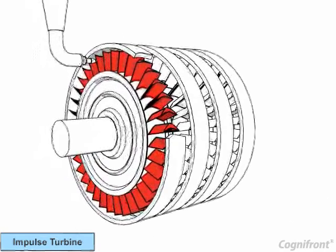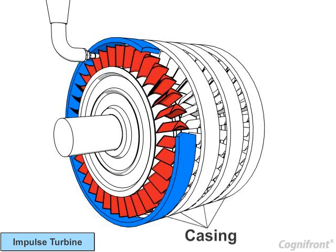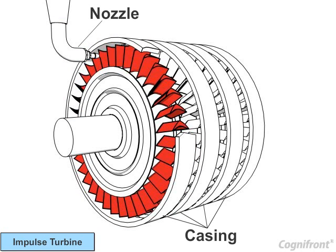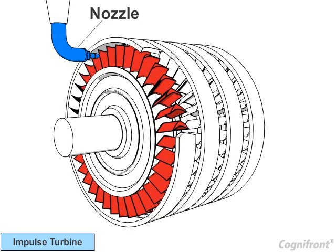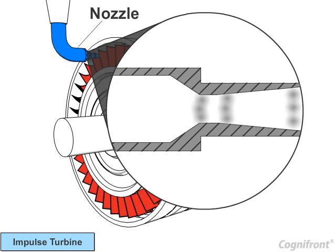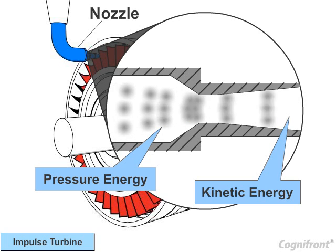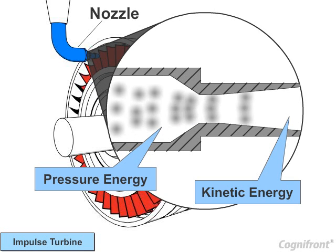Let us focus on the working of an impulse turbine. Observe the diagram here. The impulse turbine is made up of a casing, nozzle, and runner with blades. The nozzle regulates the steam flow and guides the steam to flow at appropriate velocity. As the high pressurized steam comes out through the fixed nozzle, the pressure energy of the steam is completely converted into kinetic energy.